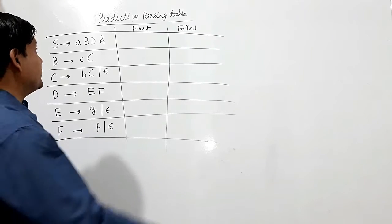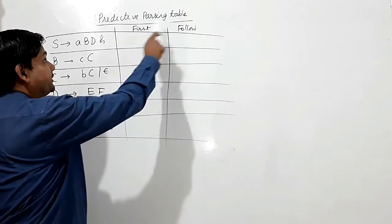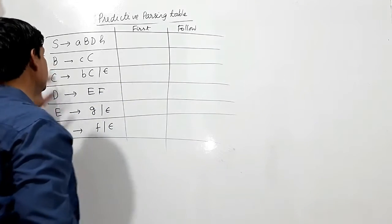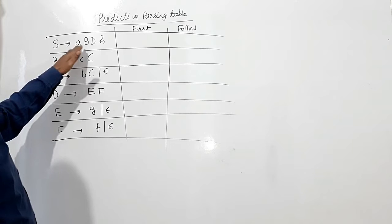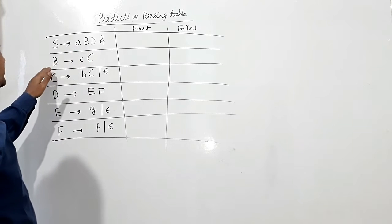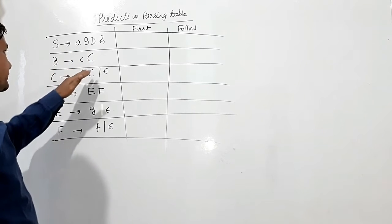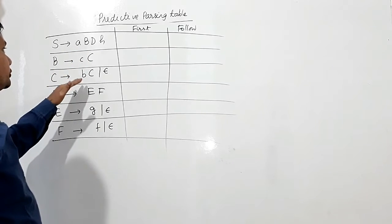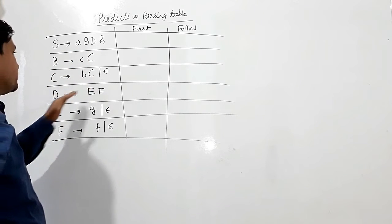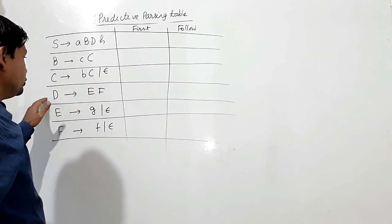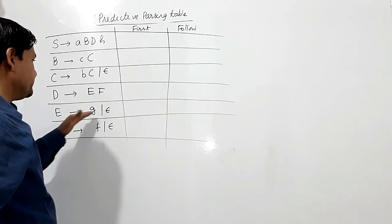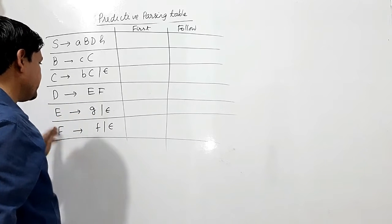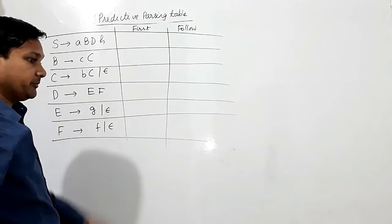We have to construct a predictive parsing table for this grammar. S is producing ABDH, B is producing CC, C is producing BC or Epsilon, D is producing EF, E is producing G or Epsilon, and F is producing F or Epsilon.